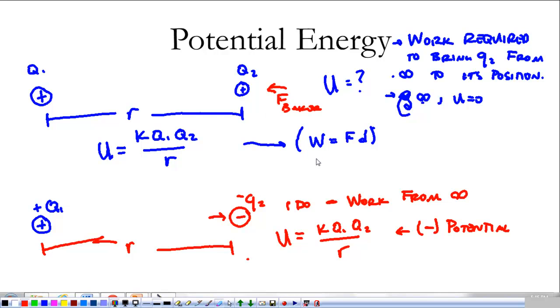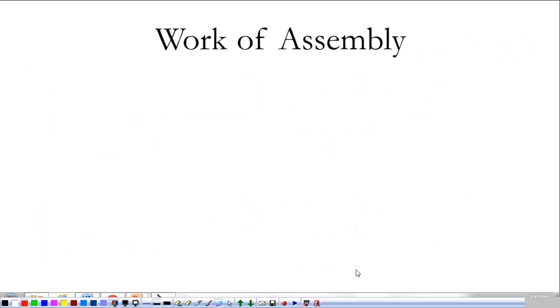Now, finding the electric potential energy really is as easy as using this equation. We're going to look at an example that's a little bit more complicated next. It's called the work of assembly.